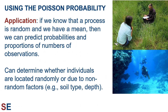So what applications do we have for the Poisson probability? One application is that if we know a process is random and we have a mean, we can predict the probabilities and proportions of numbers of observations. We could then go and measure the numbers of individuals in certain areas to determine whether they are located randomly or due to non-random factors. This sort of thing is done all the time in field ecology, for example, where scientists lay out transects and count the number of individuals in each region.